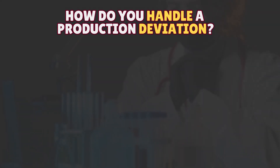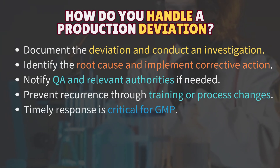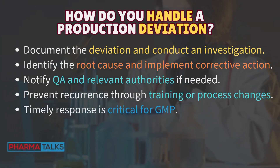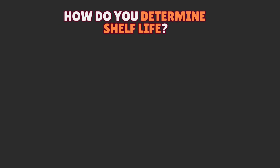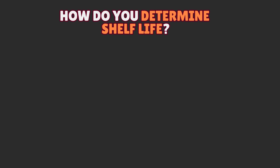How do you handle a production deviation? Document the deviation and conduct an investigation. Identify the root cause and implement corrective action. Notify QA and relevant authorities if needed. Prevent recurrence through training or process changes. Timely response is critical for GMP.